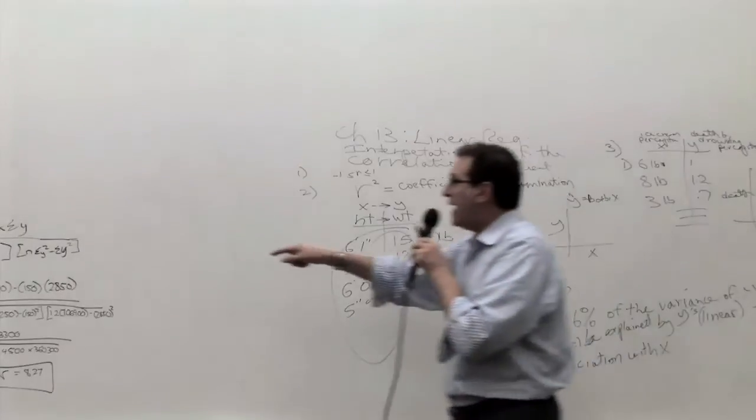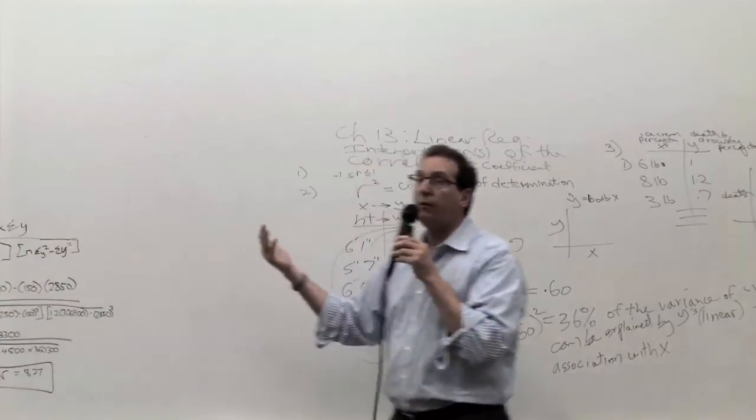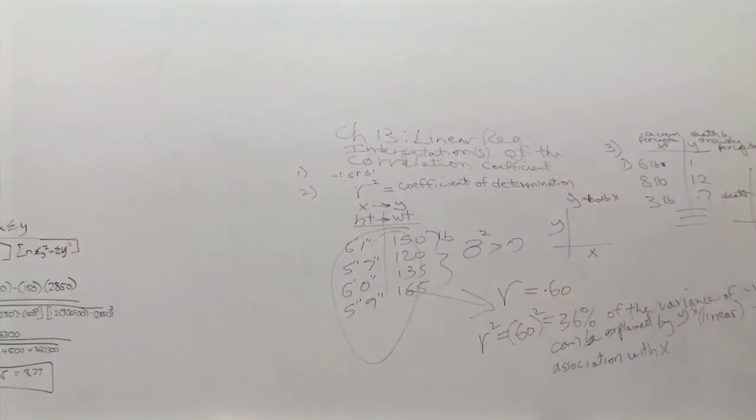But the correlation, because the formula has the X and Y are perfectly symmetric, if you change the X and Y around, you're going to get exactly the same answer. So for the correlation, it comes out the same.